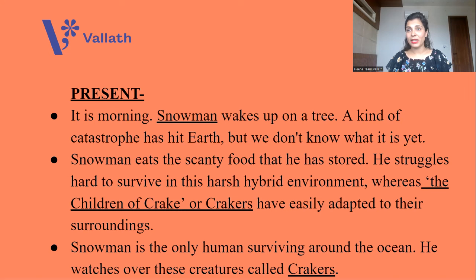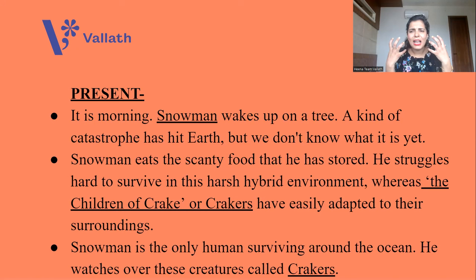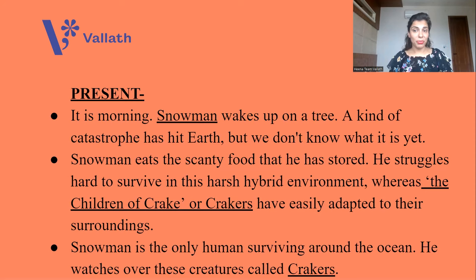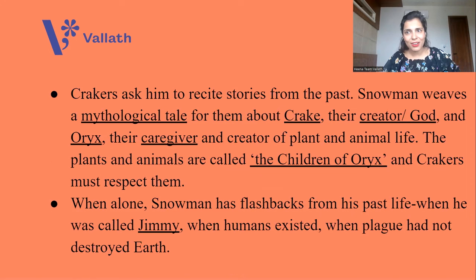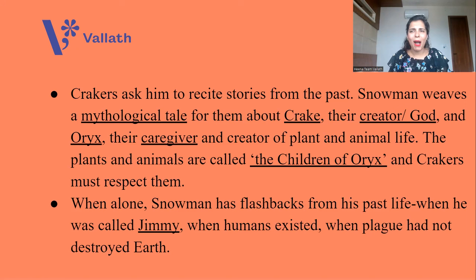Whatever is in black today will form the novel's present; whatever is in blue will form the novel's past or flashback. Black means present. It is morning — Snowman wakes up on a tree. Yes, he literally lives on a tree. A kind of catastrophe has hit Earth, but we do not know what it is yet. Snowman eats the scanty food that he has stored and struggles hard to survive in this harsh hybrid environment. Whereas Crakers, or the children of Crake, are very happy — they have easily adapted to this kind of surrounding. Snowman is the only human surviving around this seashore. He watches over these creatures called Crakers, who pester him to tell them stories from the past.